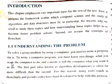Understanding the problem: To solve a given problem by using computer, you need to write a program for it. To write a computer program, you must know two things: what you want the computer to do and a means to tell the computer what you want it to do. The first part, also known as algorithm development, is often more difficult than the second. For this reason, many tools such as flowcharts and pseudocode have been developed to help with this process.